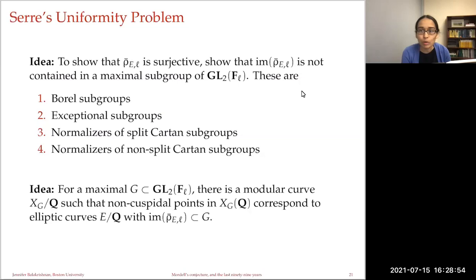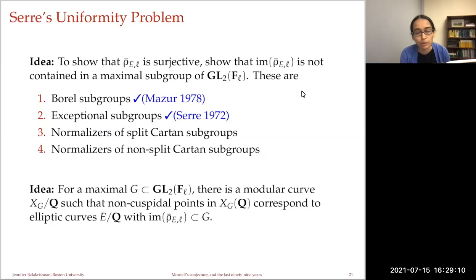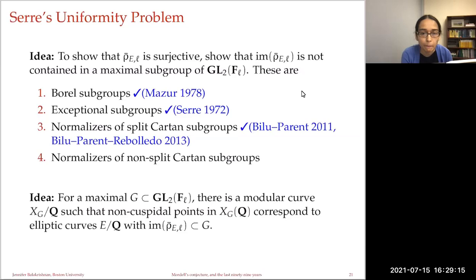What's known about these four cases? The Borel subgroup case was handled by Mazur in his work on rational isogenies of prime degree. The exceptional subgroup case is work of Serre. The split Cartan case is more recent work of Bilu-Parent and then Bilu-Parent-Rebolledo. The non-split Cartan case, on the other hand, is wide open, and there is a lot more work that needs to be done.